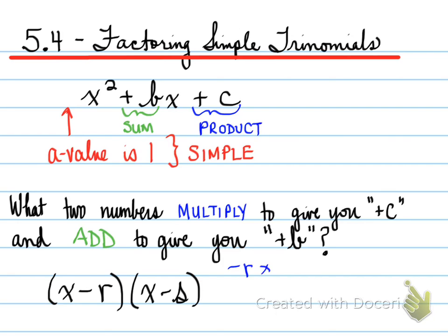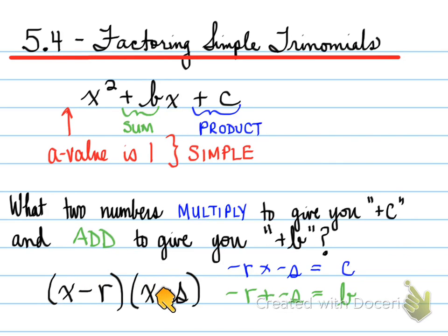Now, remember that factored form of a parabola. Basically, what they're saying is the values of negative r plus negative s gives you the sum, and negative r times negative s gives you the product. And that's how you figure that out. Let's look at examples that work with this question.